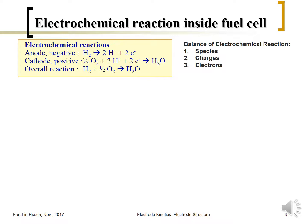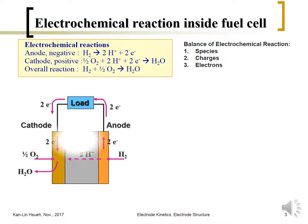In general, the schematic representing the fuel cell is given by this figure. The hydrogen diffuses in, is oxidized, and becomes a proton. The proton migrates to the cathode and combines with oxygen, which is then reduced into water.